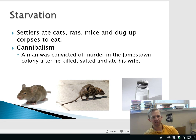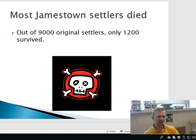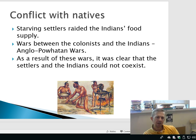Out of the 9,000 original settlers, only 1,200 survived — so 7,800 of them perished. That's just to show how deadly it was to be a Jamestown settler. And then, of course, there was the other threat besides starvation and disease, which was the Native Americans. The Natives didn't want them there, let's be honest.